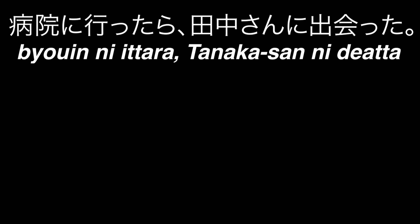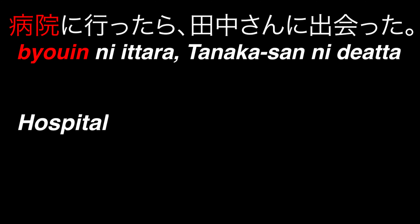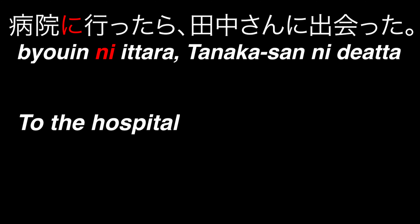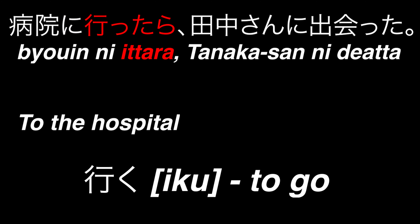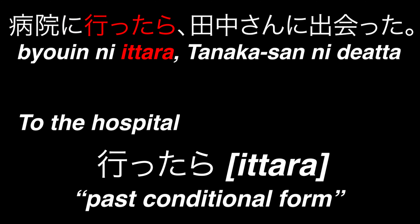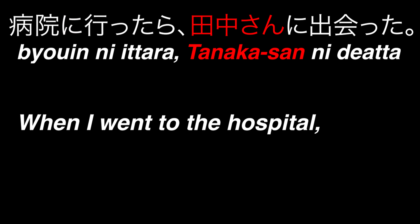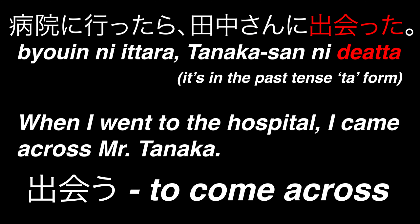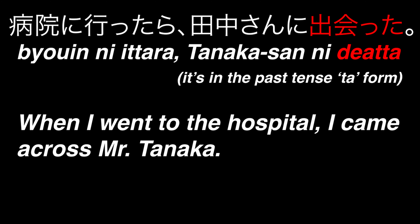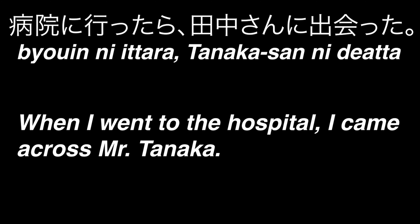Now that we're done with verbs, let's have a look at some example sentences. Byouin ni itta ra, Tanaka san ni de atta. Byouin means a hospital, and the two characters byou and in are read with their onyomi readings as it's a compound onyomi word. The particle ni means to, and it can also mean in or at. Ittara is from the verb iku, to go, put in the ta form with ra added to make it the past conditional, translating as when I went to the hospital. Tanaka san is a name meaning Mr Tanaka, and the verb de au means to come across or to meet by chance. Altogether, this sentence means: when I went to the hospital, I came across Mr Tanaka.